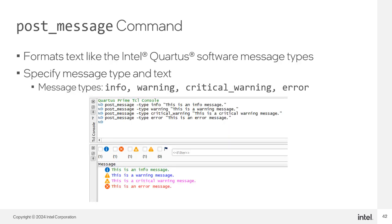The post_message command prints out messages formatted like Intel Quartus Prime Software messages. You can specify the message type and text. Supported message types include info, warning, critical warning, and error. In the screenshot you can see the four message types and how each is formatted in the system message window. However, these messages do not support right-click functions such as help and locate like regular Intel Quartus Prime Software messages.